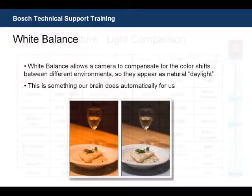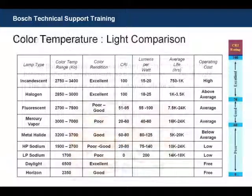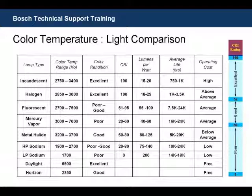Now let's take a look at a chart to see what kind of CRI different types of lights actually provide. It is important to note the trade-off of cost to performance. The poorest color rendition generally has the lowest operating costs, but this means you'll need a better CCTV camera to compensate for poor lighting conditions.